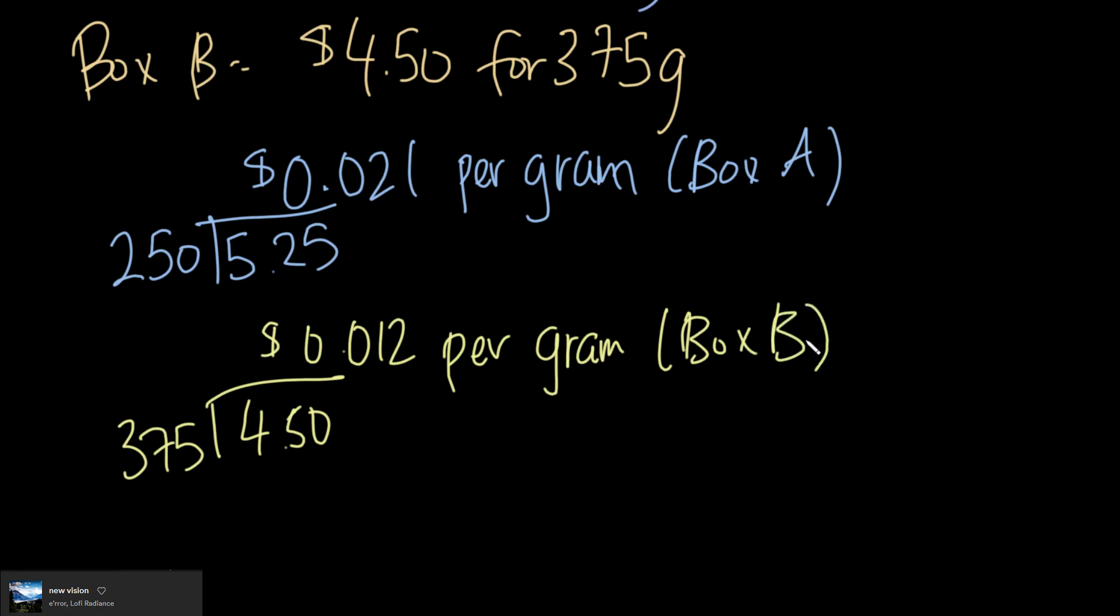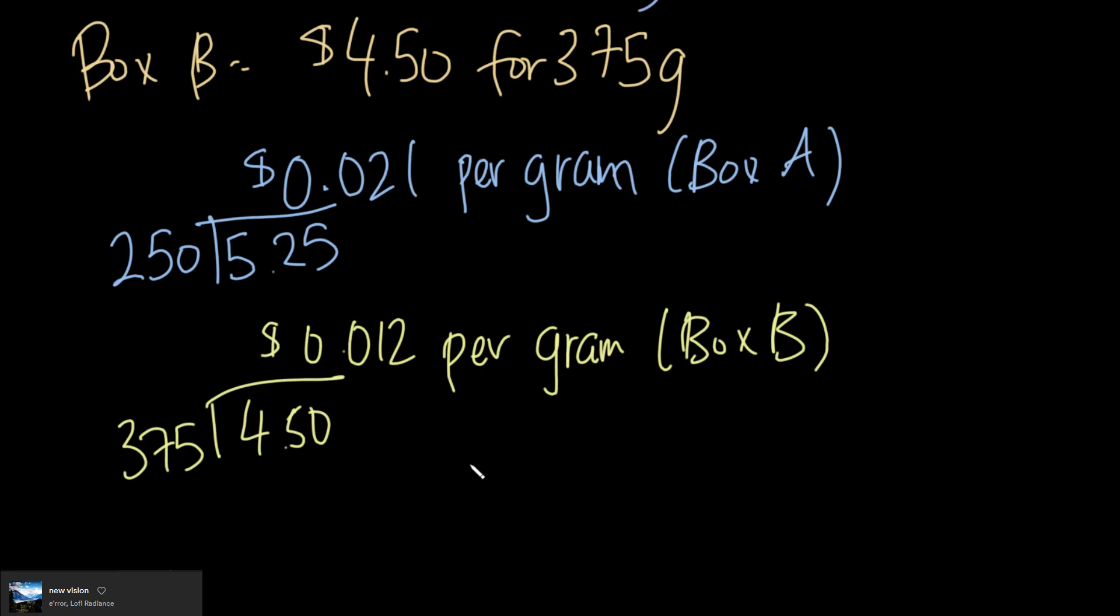Now it's asking which box is cheaper per gram and how much cheaper per gram. If I look at these two numbers, for Box A I have 0.021, for Box B I have 0.012. So Box B, because it has a lesser number, is cheaper. 0.012 is less than 0.021.